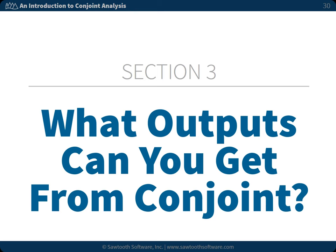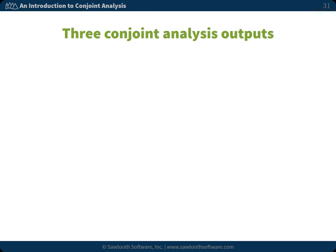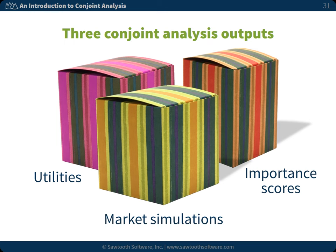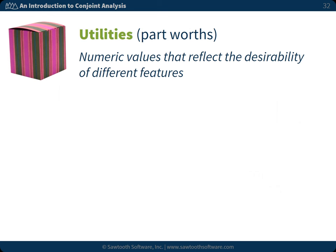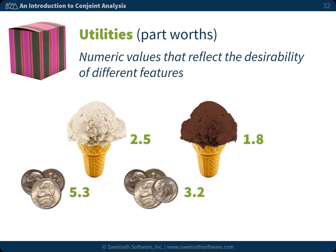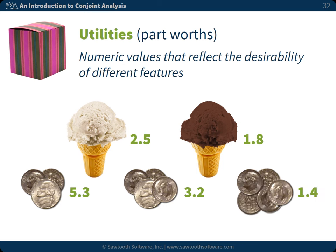Section 3: What outputs can you get from conjoint analysis? Conjoint analysis provides three main types of output: part-worth utilities, importance scores, and market simulations. Conjoint part-worth utilities are numeric values that reflect the desirability of different features. For example, let's assume we're evaluating the flavors and prices of a scoop of ice cream. For a given respondent, we might find that vanilla has a utility of 2.5 and chocolate has a utility of 1.8. The prices have part-worth utilities as well: at 25 cents per scoop, the utility score is 5.3; at 35 cents, it is 3.2; and at 50 cents, it is 1.4. The higher the utility, the better, or the more desirable.